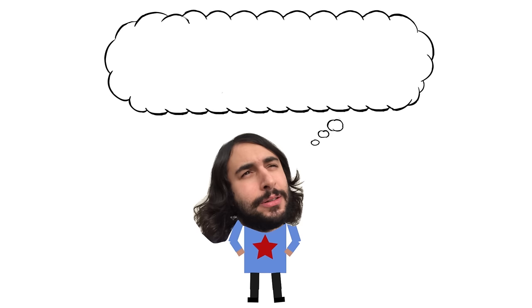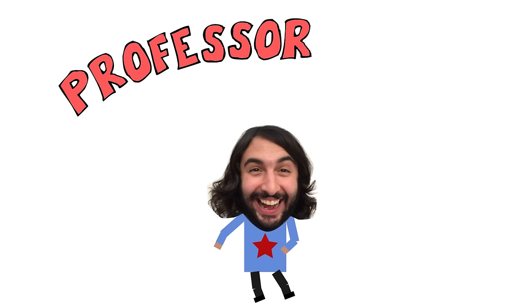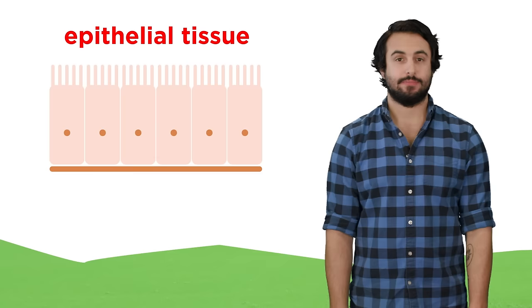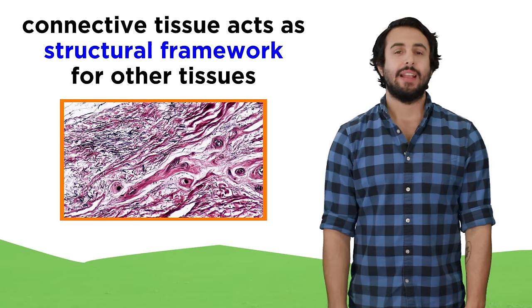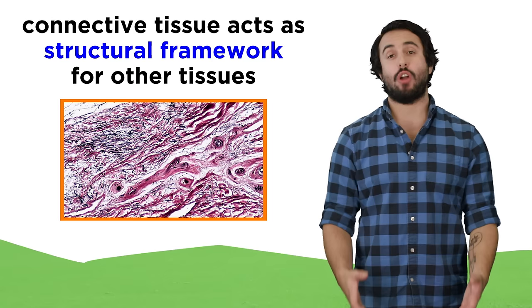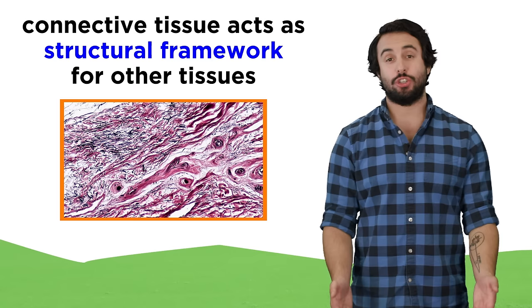Professor Dave again, let's make a connection. We just learned about all the different types of epithelial tissue, and we mentioned that these epithelia sit on top of connective tissue, which is the most abundant type of tissue. Connective tissue is incredibly important, as it provides a protective structural framework for other tissues, so let's learn about the types of connective tissue in the body and their features.